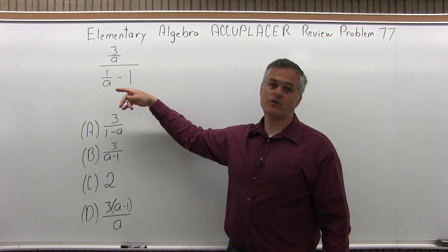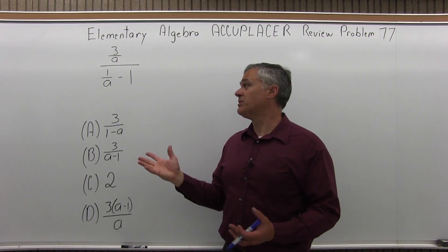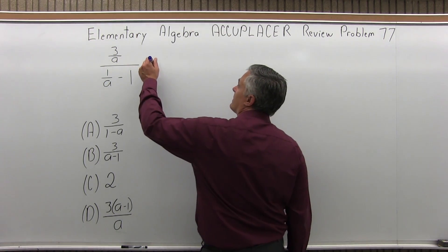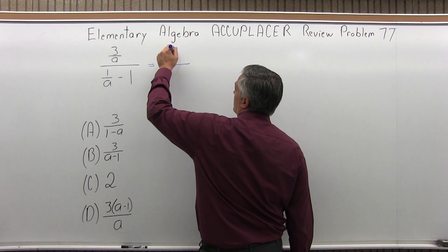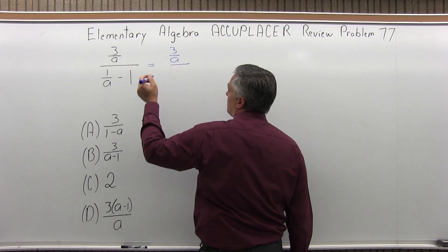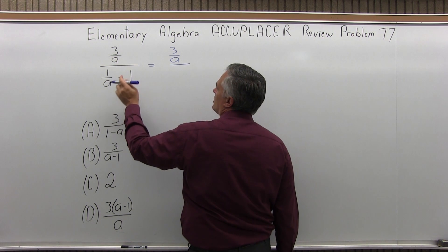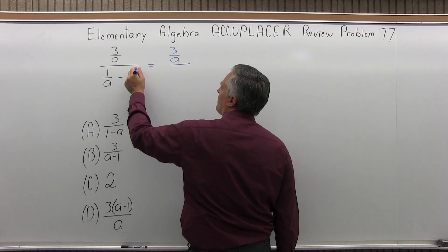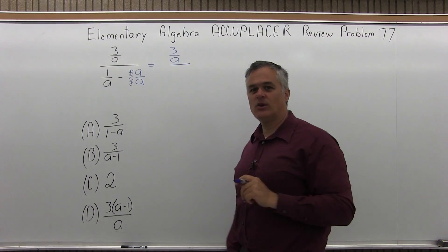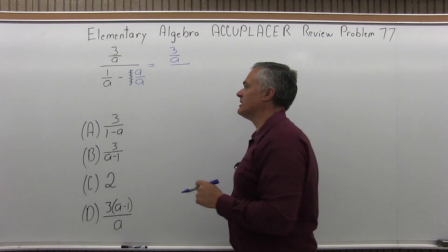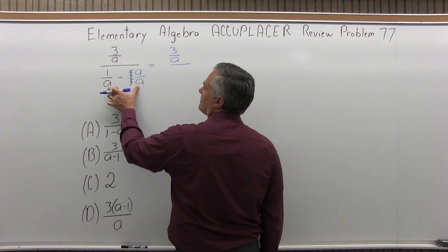Once I have one fraction over another fraction, what you do is invert or flip the bottom fraction and multiply it times the top fraction. The top already has one fraction, 3 over a — I'll leave that the way it is. But the bottom I want to combine; I want a common denominator. So let me rewrite this 1: instead of a 1, let me write it as a over a. That's still a 1 — I just changed the way it looks — but by making it a over a, I have a common denominator now.